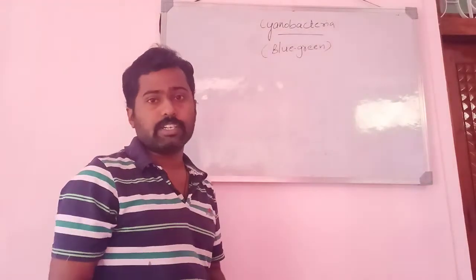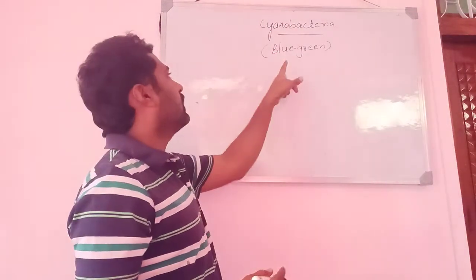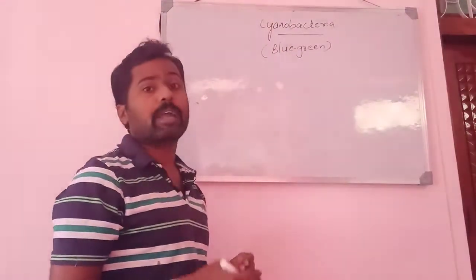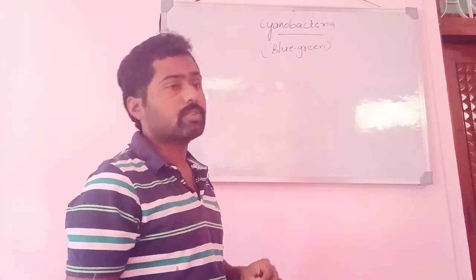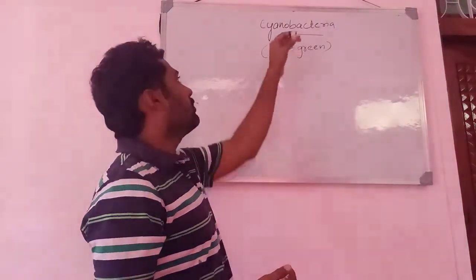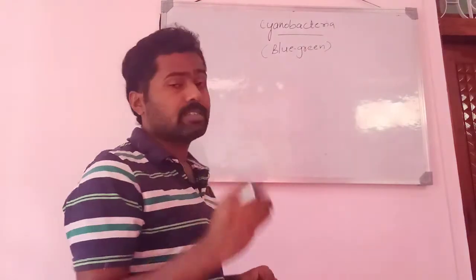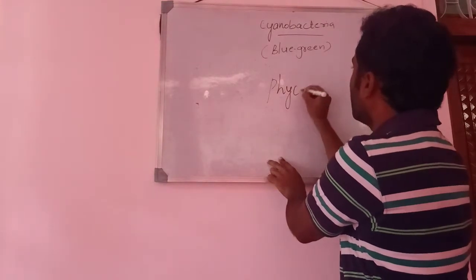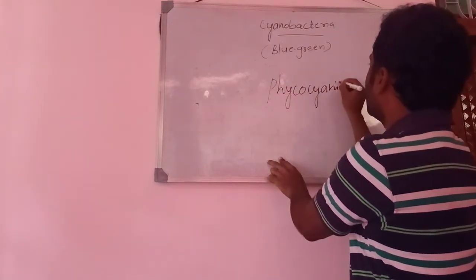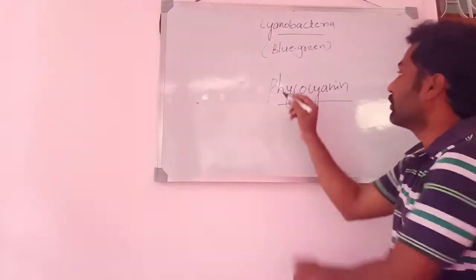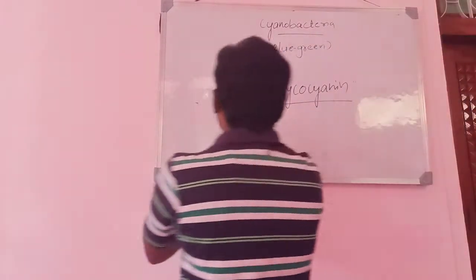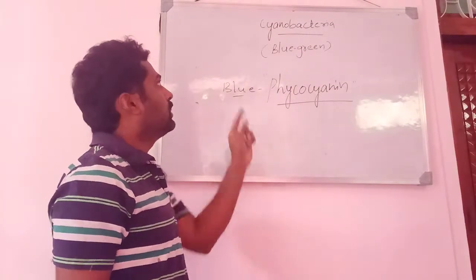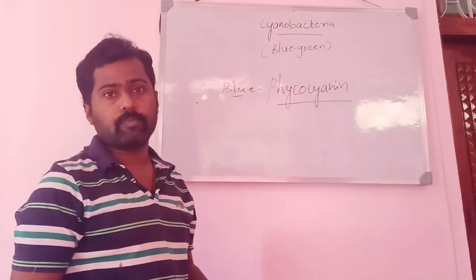The name 'blue-green algae' indicates these organisms exhibit both blue and green color — the plant body is bluish-green in nature. They were named cyanobacteria because of the presence of a characteristic blue-colored pigment called Phycocyanin.